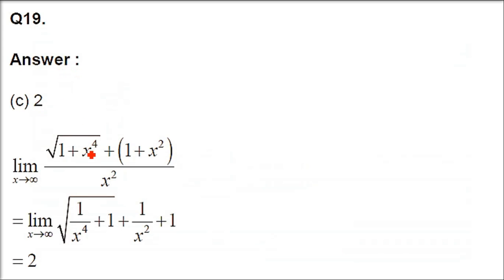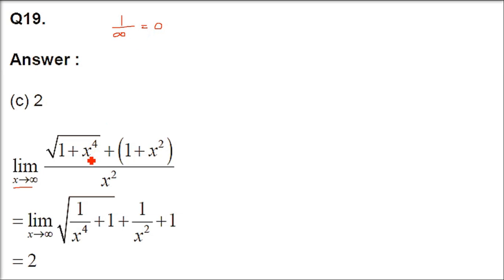This is the next question: under root (1 plus x⁴) plus (1 plus x²), divided by x square. So what do we have to do? x is tending to infinity. Infinity in the denominator will be 0. Anything divided by infinity or a very large number will always be 0. We know that we can take the highest power which is x square, so divide numerator and denominator by x square.